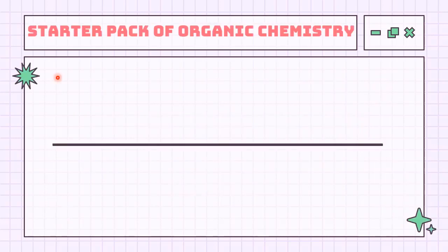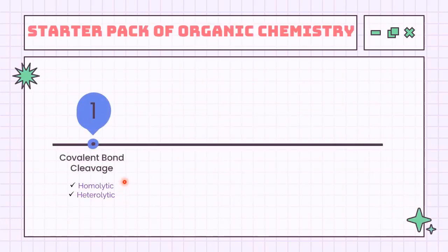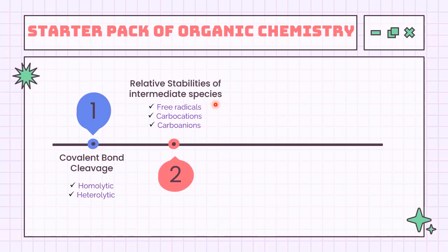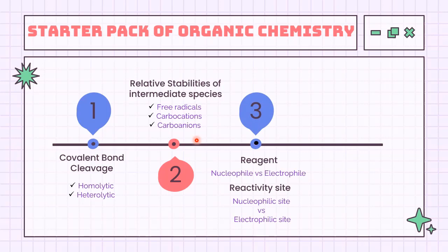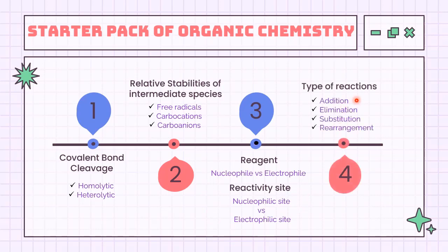For this subtopic, we're going to first be introduced to the two covalent bond cleavages — homolytic and heterolytic. This bond cleavage will form intermediate species of free radicals, carbocations, and carbanions. We'll look at their relative stabilities to determine their reactivity in reactions. You will need to classify which species will be the one to attack and which is being attacked — termed as nucleophile and electrophile — as well as their reactive sites. Once all species involved are ready, either additions, eliminations, substitutions, or rearrangements will take place.